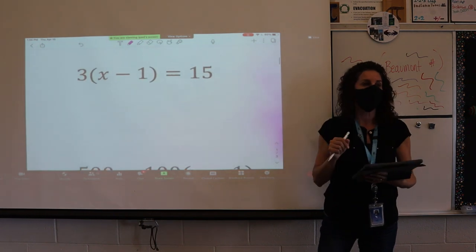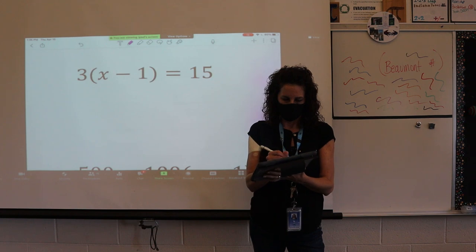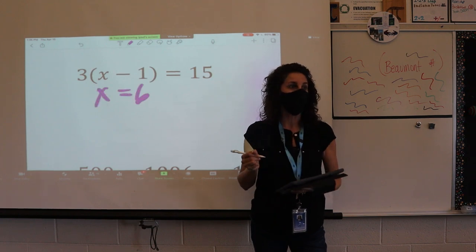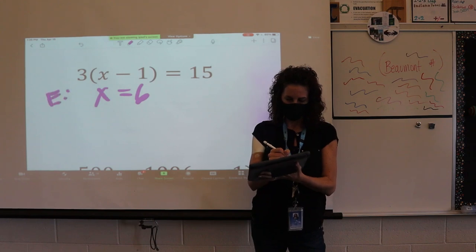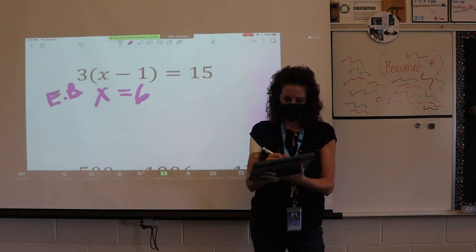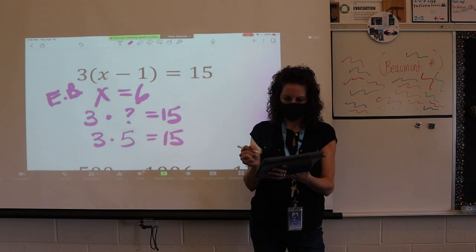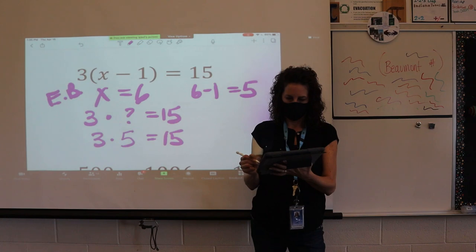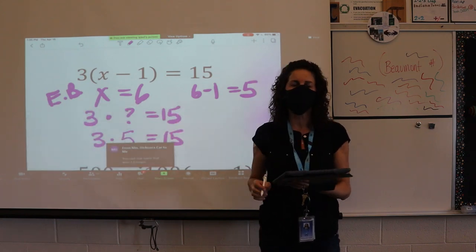This is the one you originally were talking about. Let's have somebody else explain this one. I think it would be 6 again as x. x equals 6 again. Because, first of all, I know 3 times blank is 15, and I know a factor of that is 5. And so I was thinking maybe I could do 6 minus 1, and I would get 5, and then 3 times 5 equals 15. Awesome job.